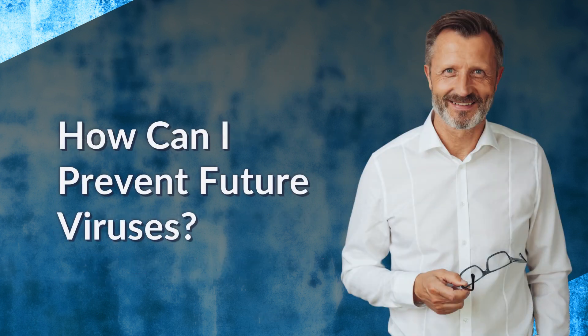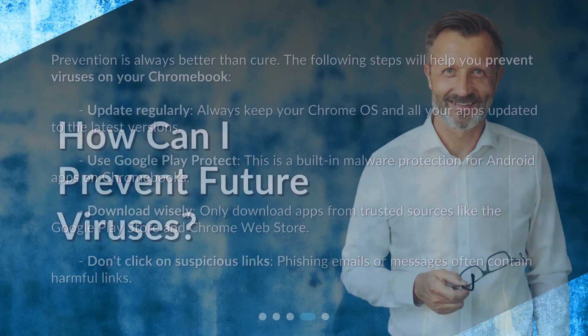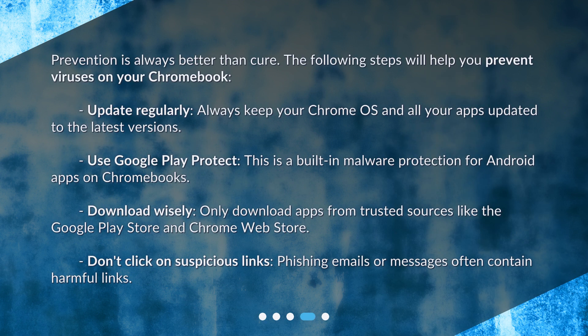How can I prevent future viruses? Prevention is always better than cure. The following steps will help you prevent viruses on your Chromebook. Update regularly: always keep your Chrome OS and all your apps updated to the latest versions. Use Google Play Protect, a built-in malware protection for Android apps on Chromebooks. Download wisely: only download apps from trusted sources like the Google Play Store and Chrome Web Store. Don't click on suspicious links, as phishing emails or messages often contain harmful links.